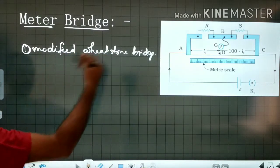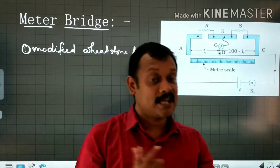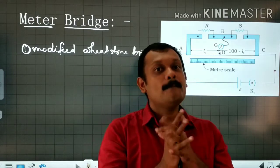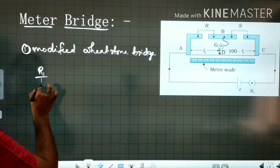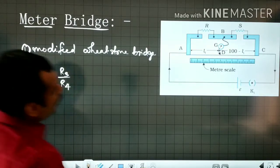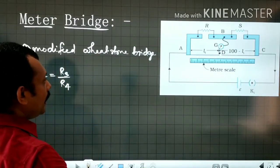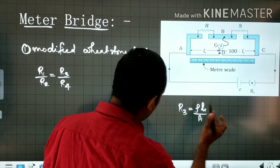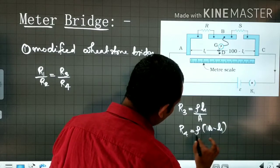Now, the two resistors are replaced with a homogeneous wire of uniform cross section. Our relation is R1 by R2 is equal to R3 divided by R4. This is the point where the bridge is balanced — that is T. The length is L1 and the other length is 100 minus L1. So R3 is equal to rho times L1 divided by A, and R4 is equal to rho times (100 minus L1) divided by A.